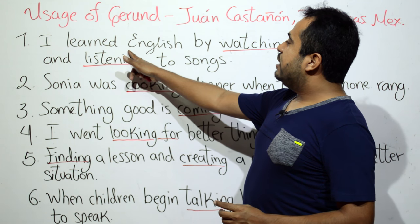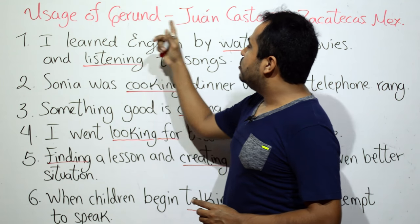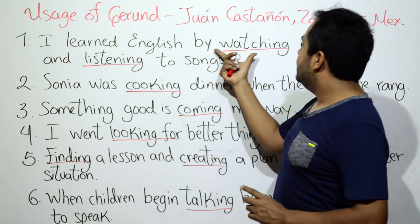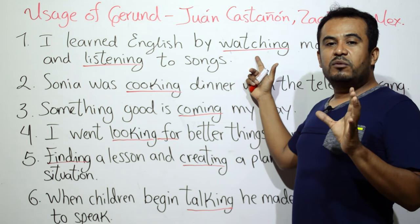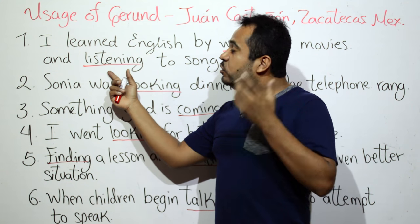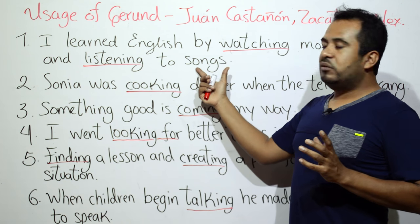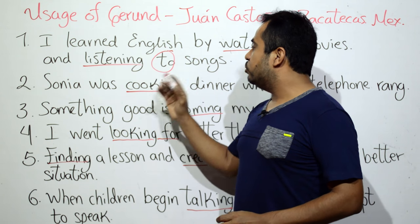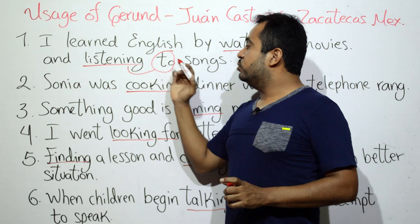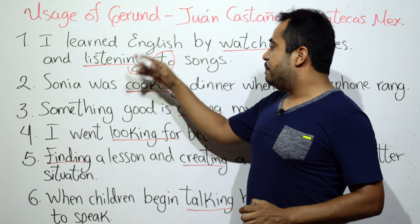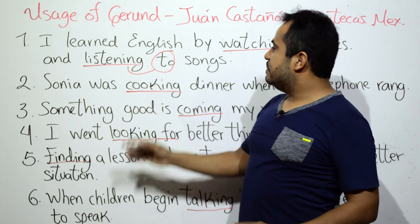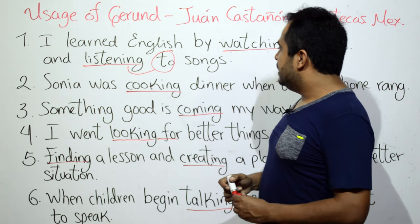El primer ejemplo: 'I learned English' — es un pasado simple: sujeto, verbo en pasado, complemento. Aprendí inglés. 'By watching' — por mirar películas — 'and listening to songs' — y escuchar canciones. Recordemos que después de 'listening' siempre va 'to' — es un verbo que nunca se le despega la partícula 'to': listen to, listening to, listened to, will listen to — siempre va a llevar 'to'.